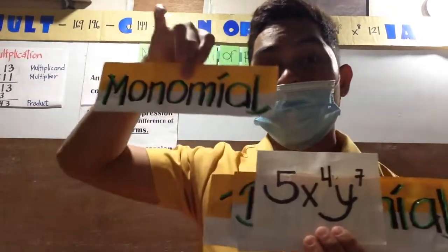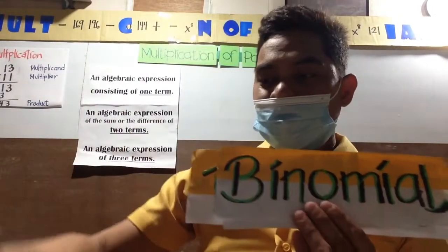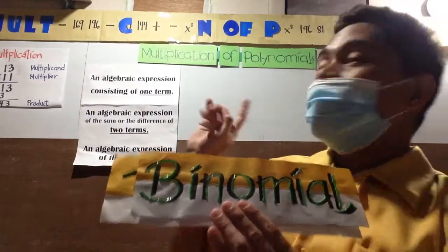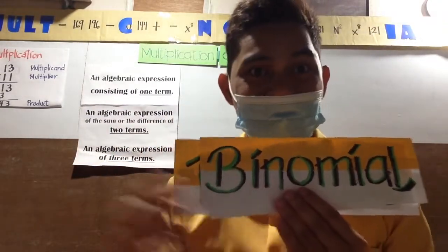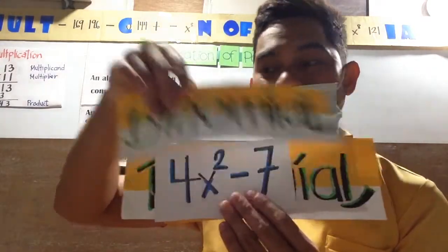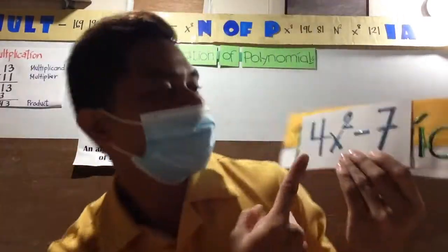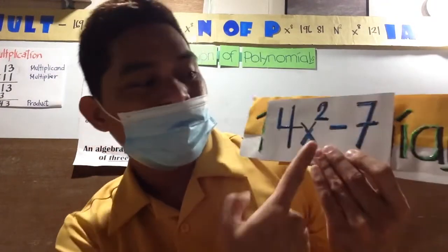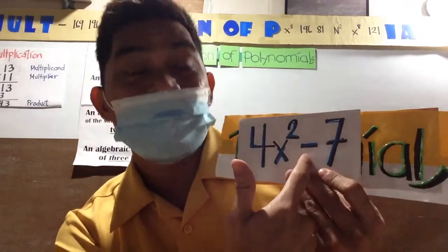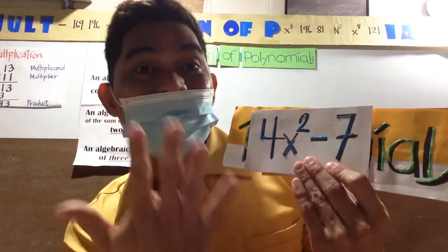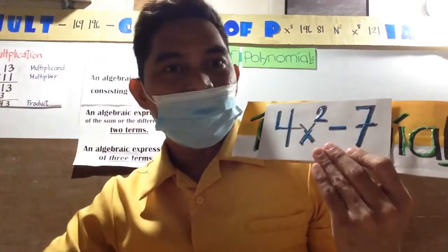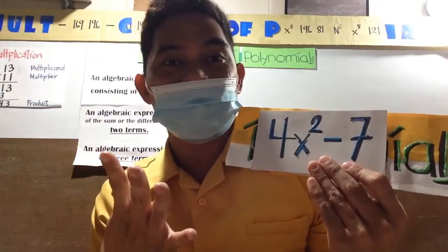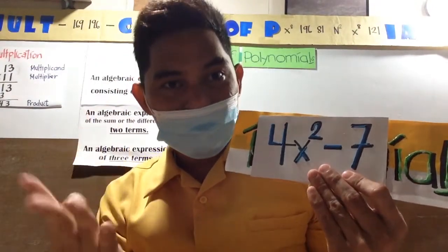Monomial - here is an example: 5x raised to 4, y raised to 7. As long as it's one term, it's called monomial. Next, we proceed to two terms in a polynomial. It's called binomial. And here is an example: 4x squared minus 7. When it involves positive and negative signs and has two terms, it's called binomial.